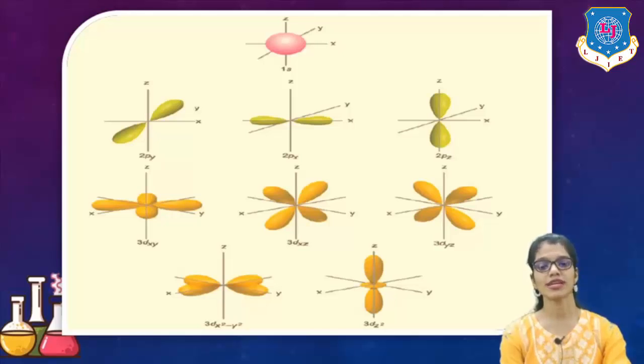Let's move on to the next one, which is D orbitals. D orbitals have clover leaf shape. As we have seen that P has dumbbell shape, D has clover leaf shape. It can be divided into five different types.